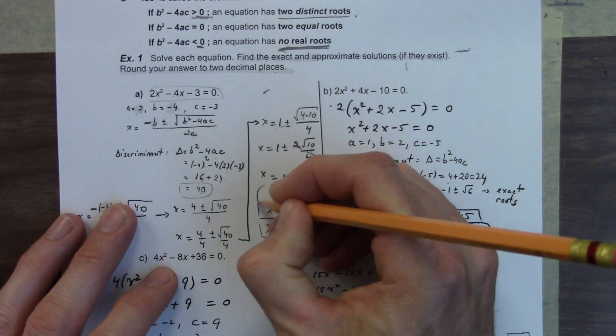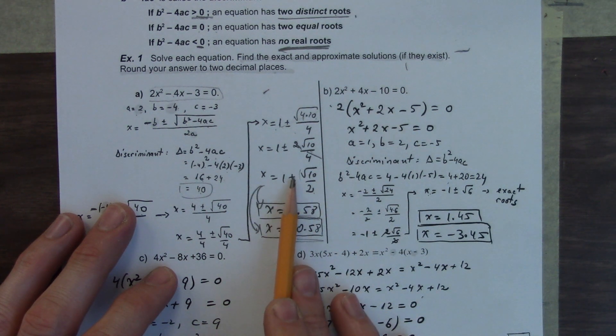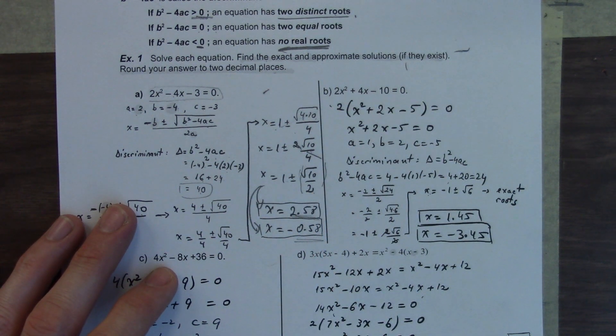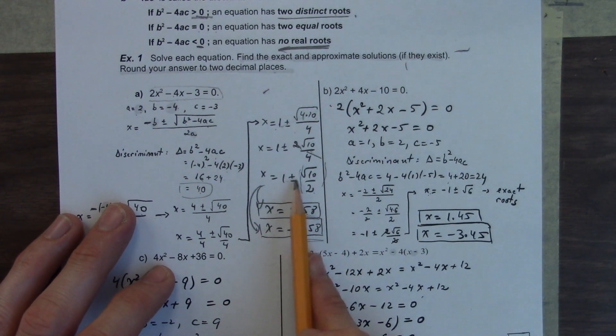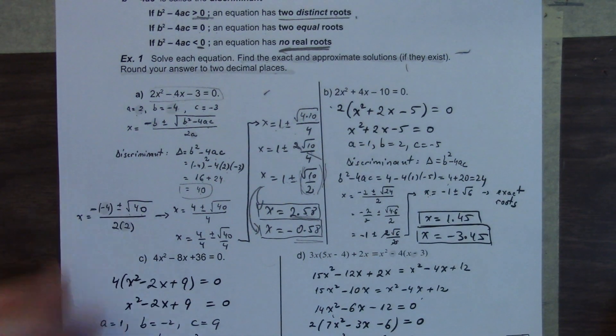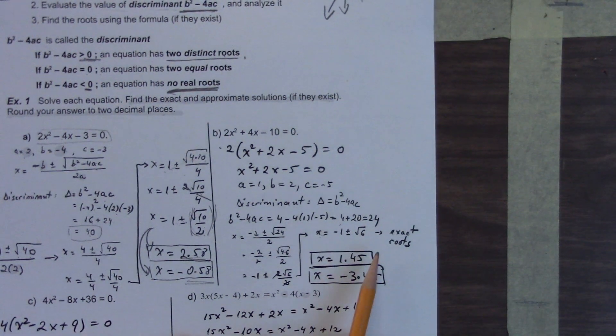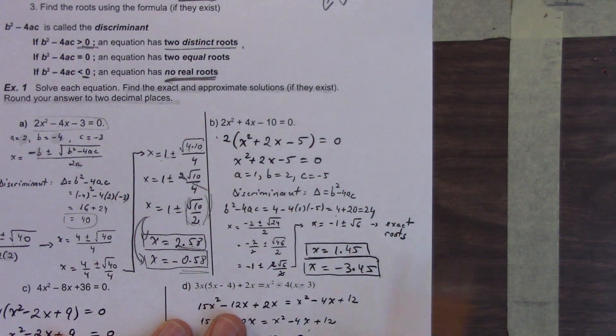So these become our two answers. And we use a calculator to get these values. We do in our calculator 1 plus bracket root 10 divided by 2. That should give us this value, 2.58. And then x equals 1 minus root 10 over 2. You've got to make sure you use brackets on your calculator. Any questions for this one?